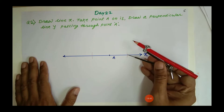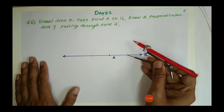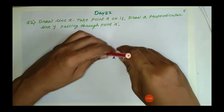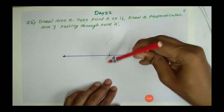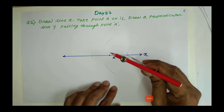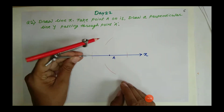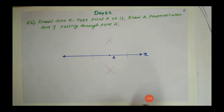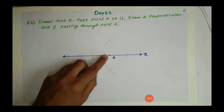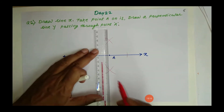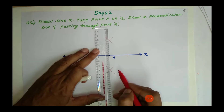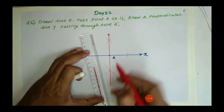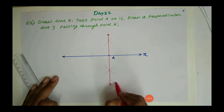Put the metal end on the endpoints of the arc intersections, take more than half the distance, and make arcs on both sides. Draw the line through the intersected points — this is your required perpendicular line Y, perpendicular to line X.